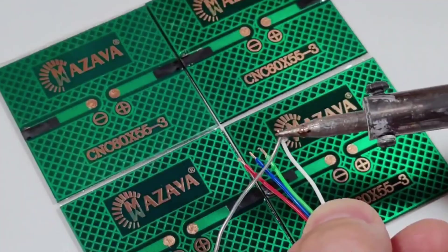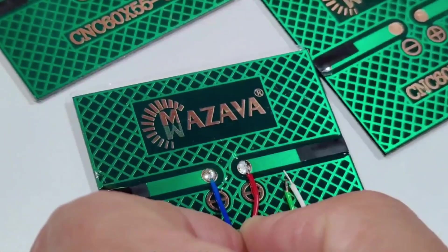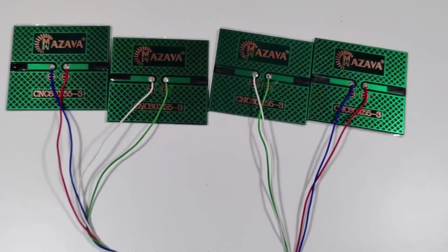First, solder power wires to the positive and negative terminals of each solar panel. After soldering, set the panels aside.